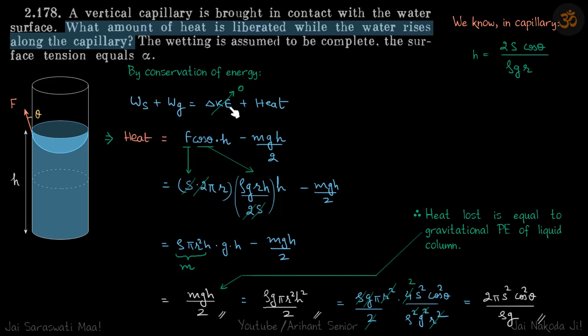Now initially the liquid was at rest, and when it has risen up then finally also it is at rest, so delta KE is zero. So heat is equal to work done by surface tension plus work done by gravity.